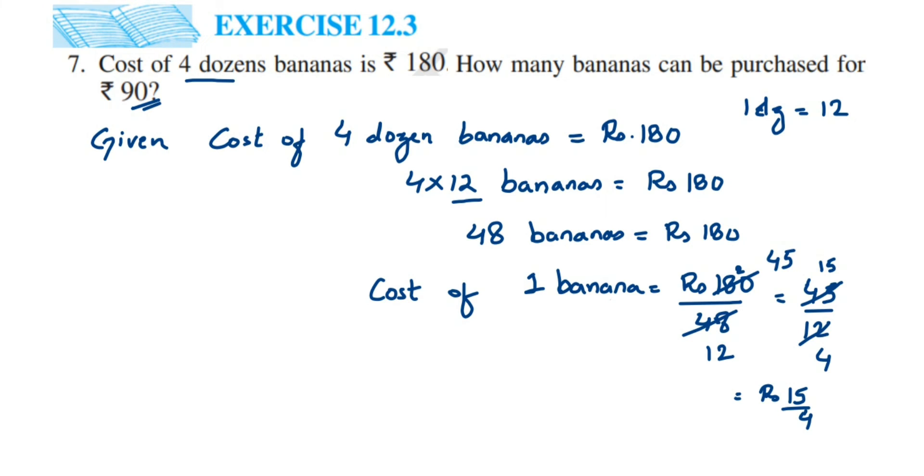We have to find out for 90 rupees how many bananas we can purchase. I'm going to give a small example. Suppose I have 10 rupees and you have to purchase a pencil, and cost of one pencil is 2 rupees. How many such pencils you can buy for 10 rupees? We can purchase 5. How we got 5? If I divide 10 by 2, I'll get 5. So 5 pencils I can buy for 10 rupees because each pencil is 2 rupees.